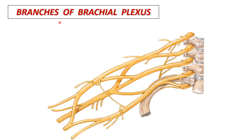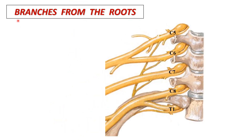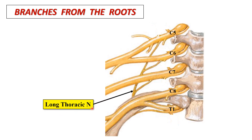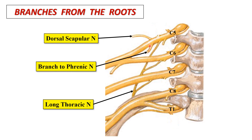Let's see the branches of the brachial plexus. They arise from roots, trunks, and cords of the brachial plexus. Branches from the roots: rootlets from C5, C6, and C7 unite to form the long thoracic nerve. The C5 root gives rise to two branches: the dorsal scapular nerve and a branch to the phrenic nerve.